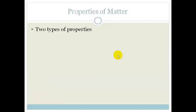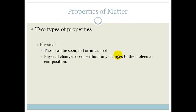Properties of matter. There are two types of properties. There are physical properties and chemical properties. Physical properties are the properties that can be seen, felt or measured.